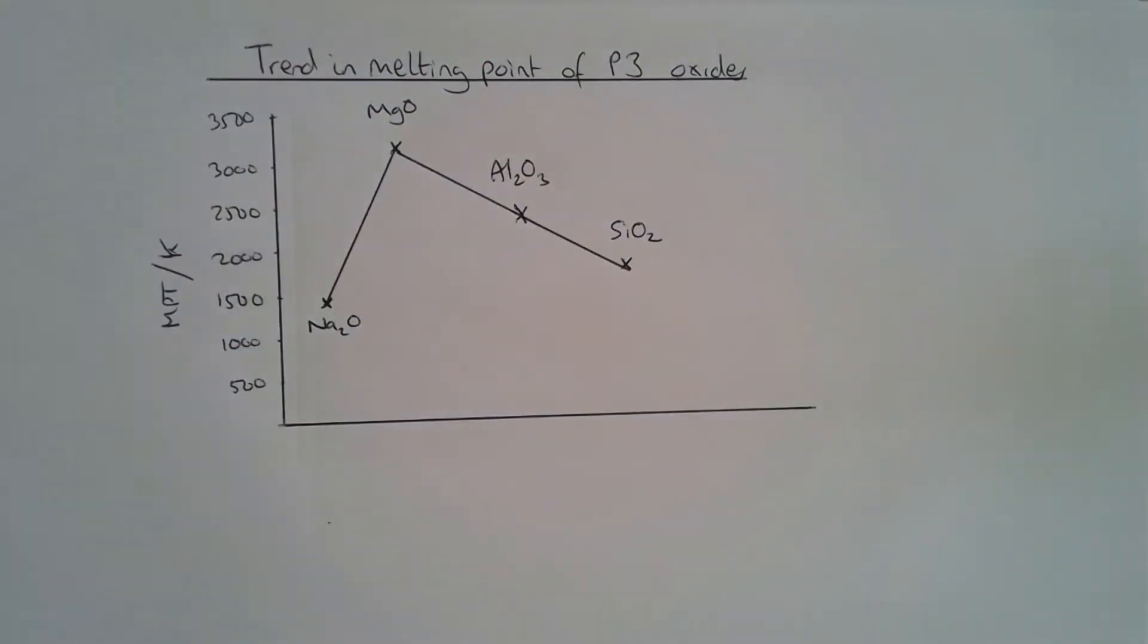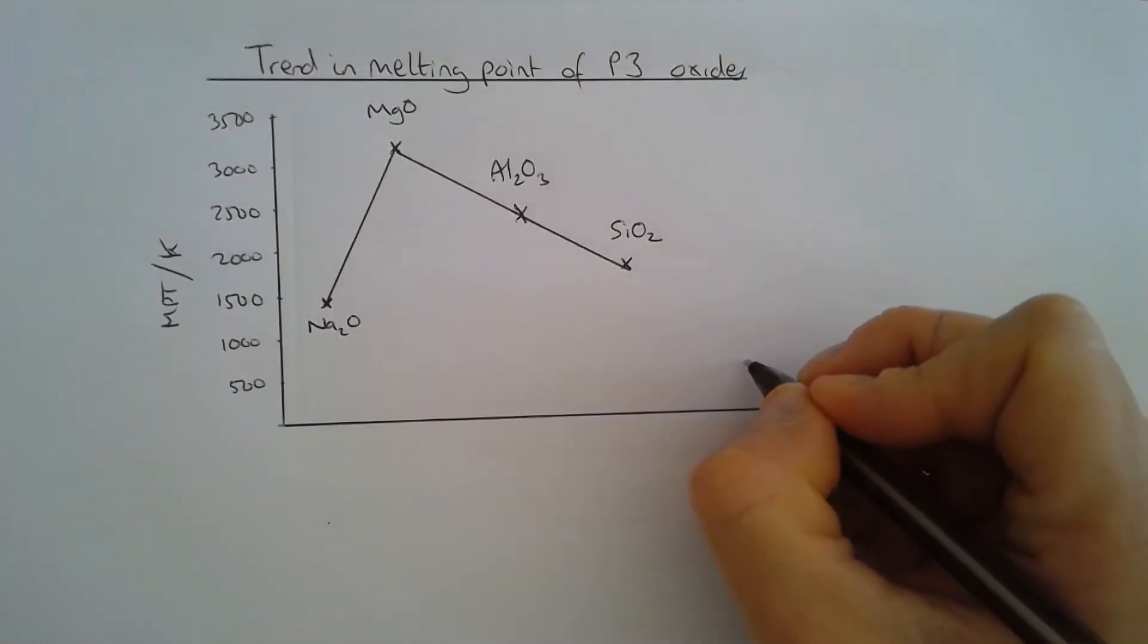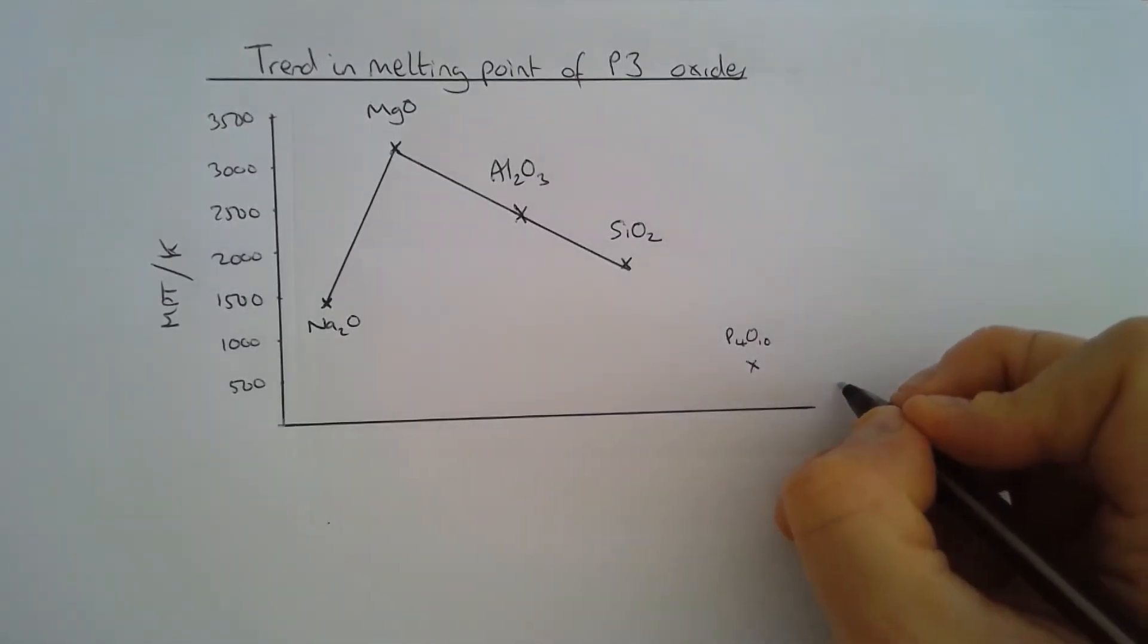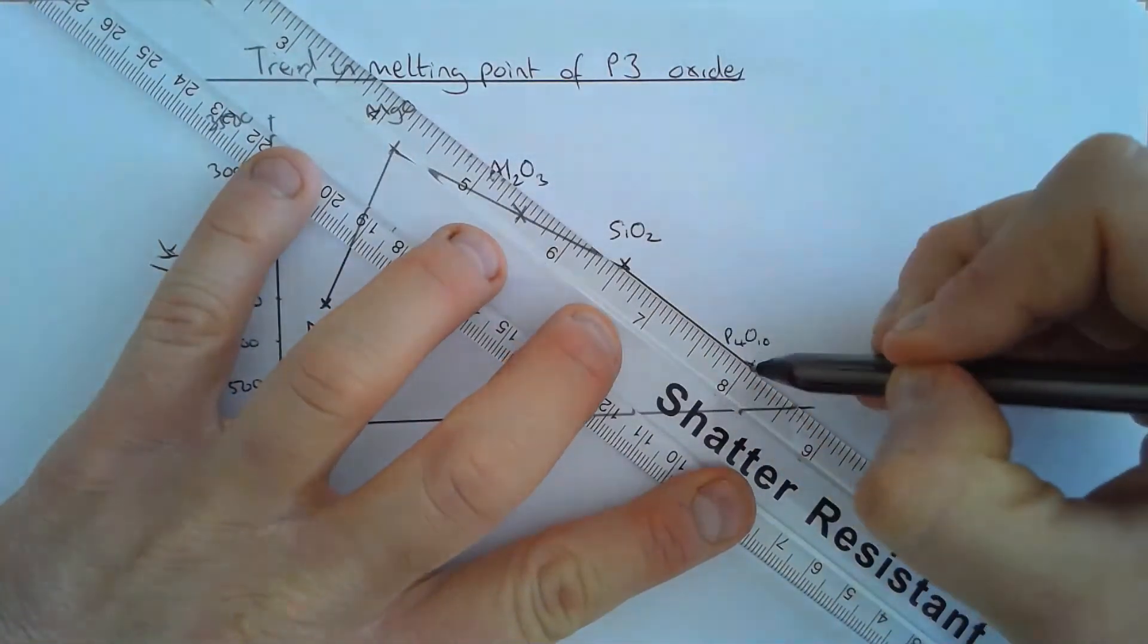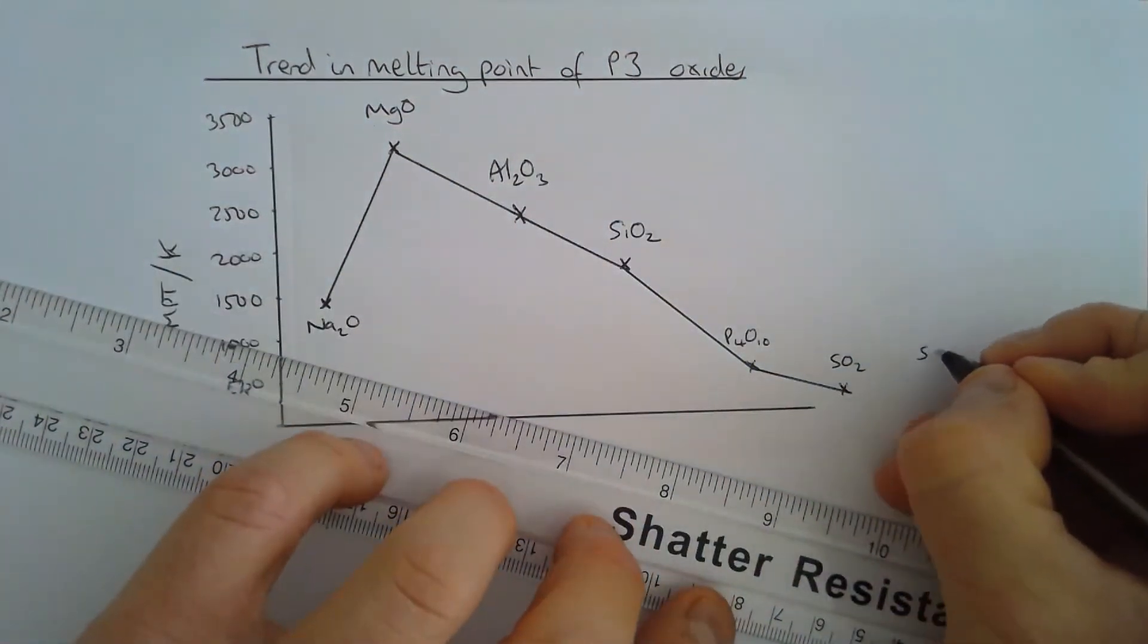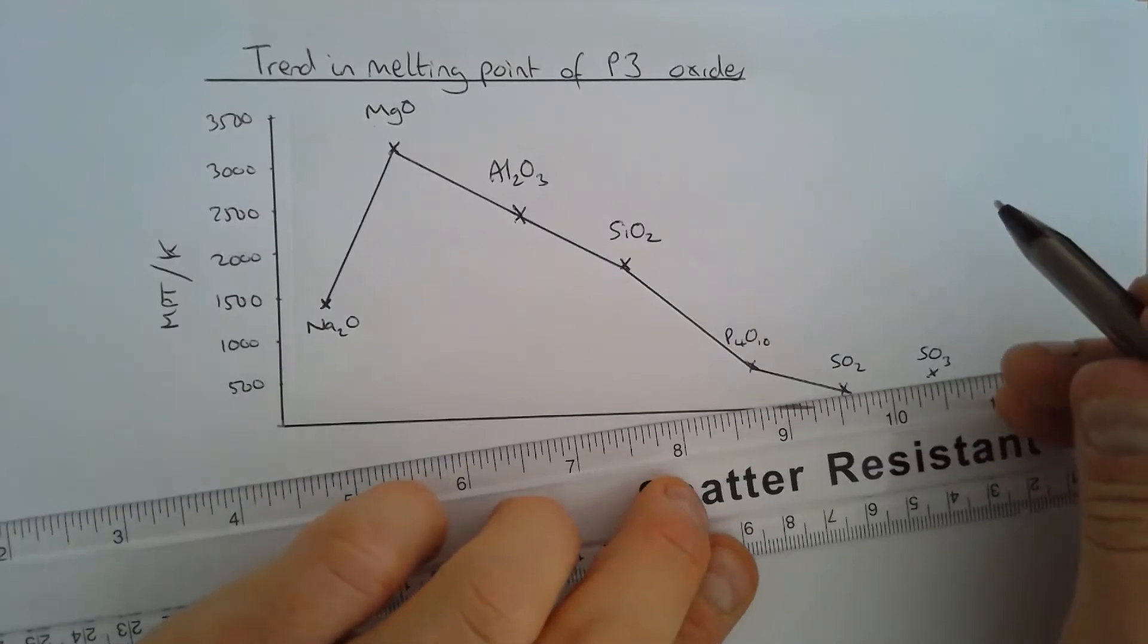Then we come to our purely molecular non-metallic oxides. Phosphorus oxide, P4O10, is down here. And then sulphur dioxide is going to be very, very low indeed. We also need to talk about sulphur trioxide, which is going to have a melting point a little bit higher than sulphur dioxide.